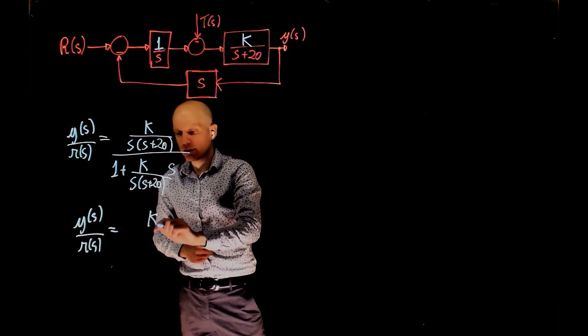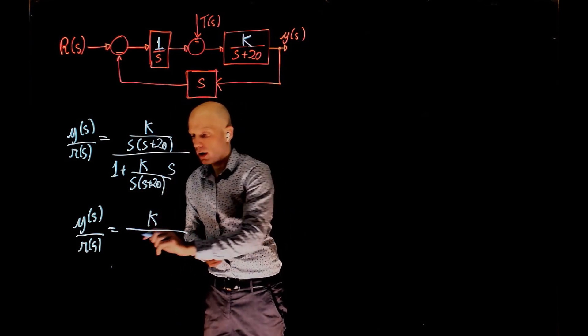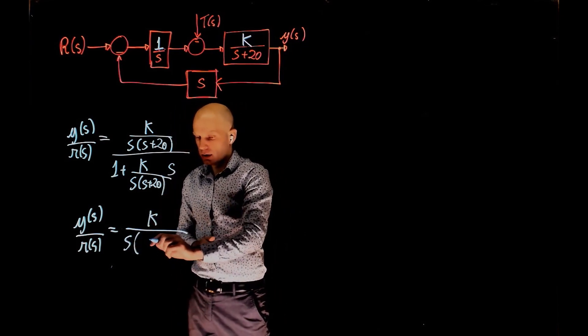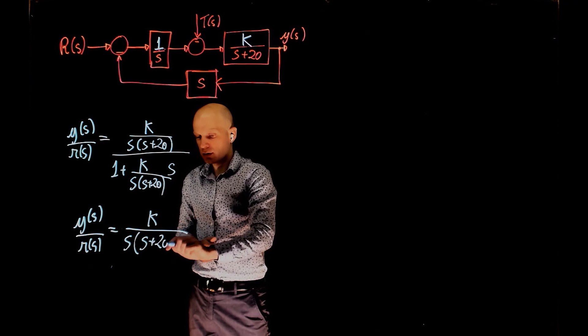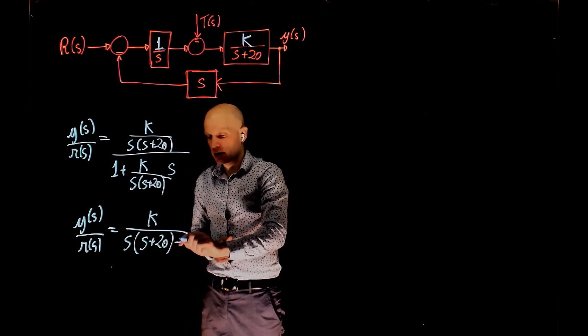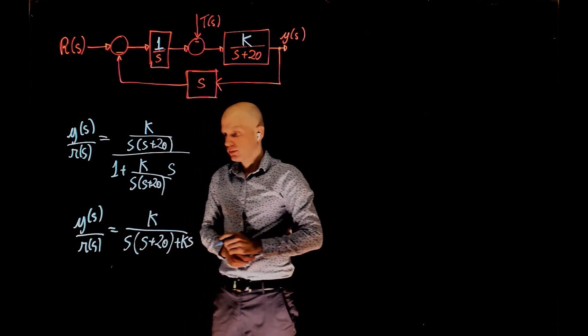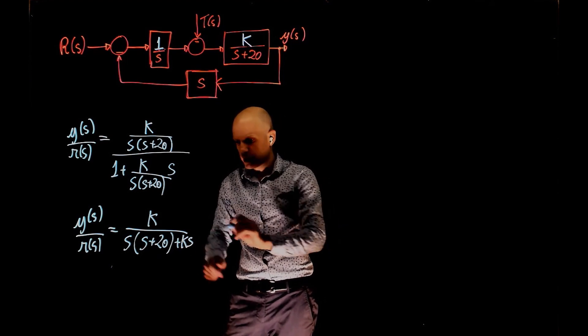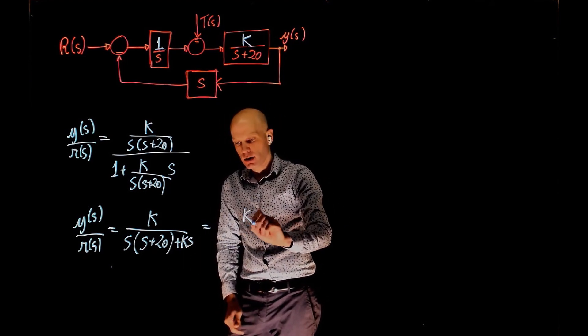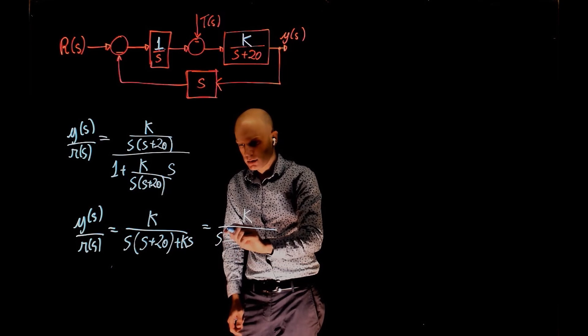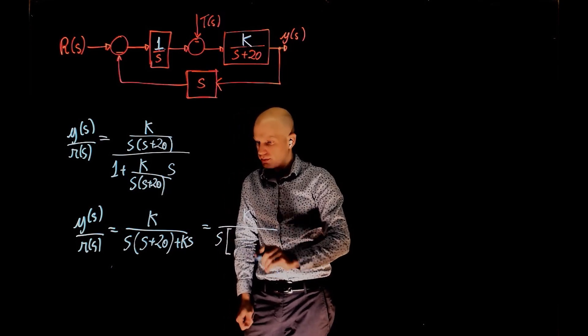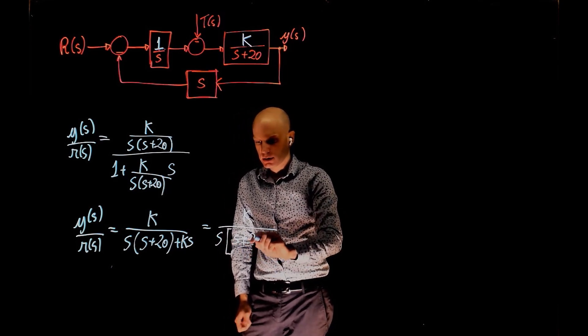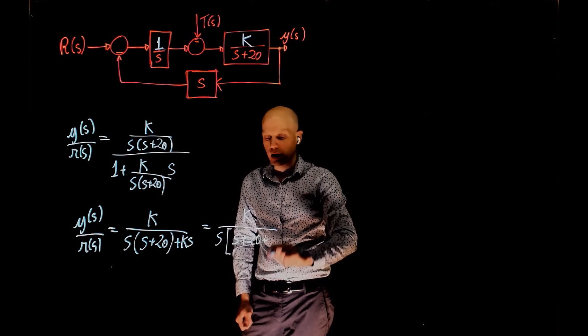And if you now factor s in the denominator, that is k over s times (s + 20 + k).